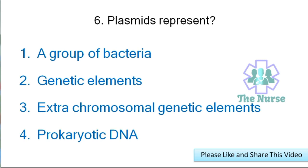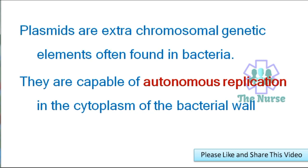Next question: Plasmids represent — a group of bacteria, genetic elements, extrachromosomal genetic elements, or prokaryotic DNA? Correct answer is extrachromosomal genetic elements. Plasmids are extrachromosomal genetic elements often found in bacteria. They are capable of autonomous replication in the cytoplasm of the bacterial cell.